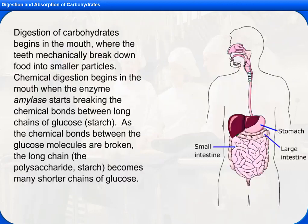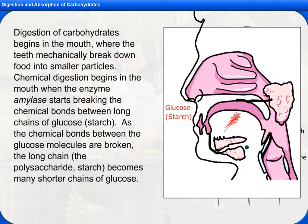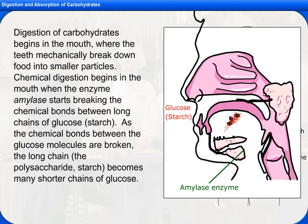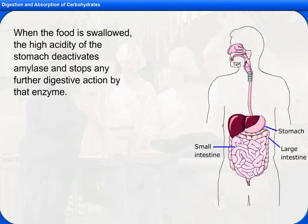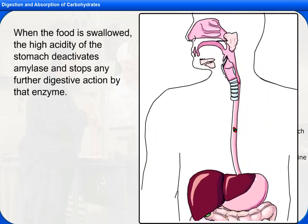Digestion of carbohydrates begins in the mouth, where the teeth mechanically break down food into smaller particles. Chemical digestion also begins in the mouth, when the enzyme amylase starts breaking the chemical bonds between long chains of glucose, or starch. As the chemical bonds between the glucose molecules are broken, the long chain polysaccharide starch becomes many shorter chains of glucose. When the food is swallowed, the high acidity of the stomach deactivates amylase and stops any further digestion action by that enzyme.